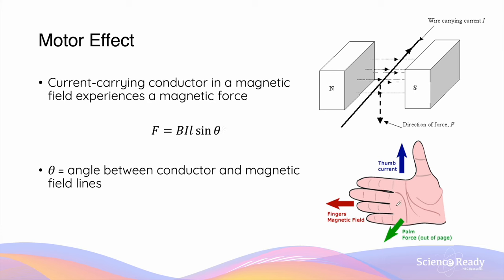The direction of this motor effect force can be easily determined using the right-hand palm rule. The thumb is in the direction of the current, the four fingers are in the direction of the magnetic field, and the palm will be facing the direction of the force.